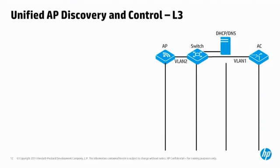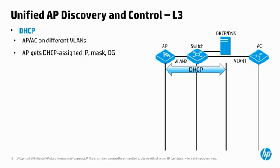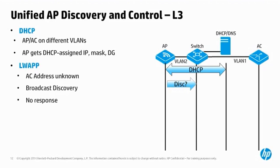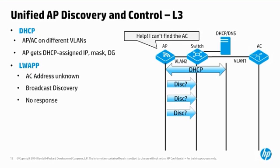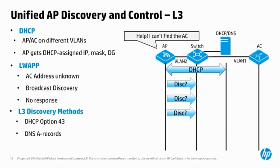In this scenario, note that the AC remains in VLAN 1. However, the AP is now in VLAN 2. The AP uses DHCP as before to get an IP address, mask, and gateway. The AP sends an LWAP broadcast, which the AC does not receive — by definition, routers do not forward broadcast packets; the router is the end of a broadcast domain. In this Layer 3 scenario, the AP cannot discover ACs using a broadcast. We need some other mechanism to enable this discovery process. One such mechanism is to use DHCP option 43, and another is to configure DNS A records.